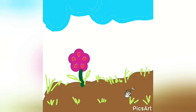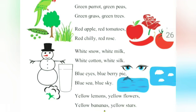Let's again repeat the poem colors. Green parrots, green peas. Green grass, green trees. Red apple, red tomato. Red chili, red rose.